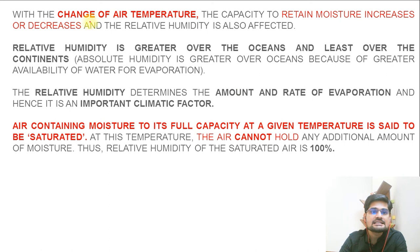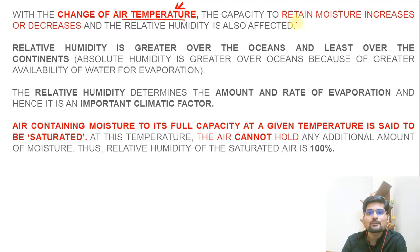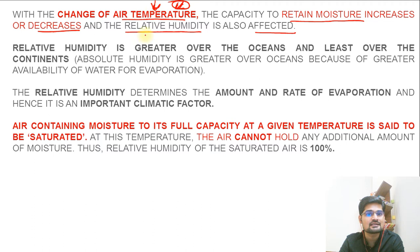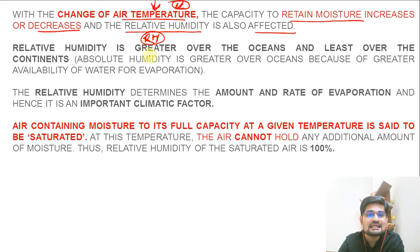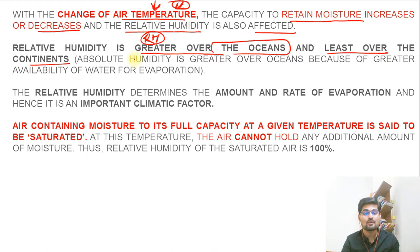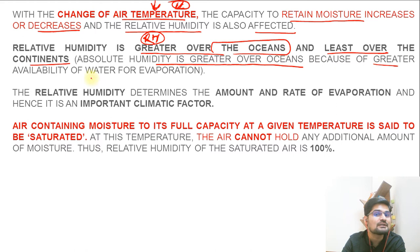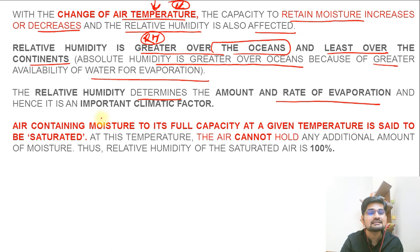The change of air temperature is a key factor. On earth there is change of temperature across latitudes and many topographical factors are also related to this. The capacity to retain moisture increases or decreases and relative humidity is also affected. Temperature changes will automatically change the capacity of the air to hold moisture. Relative humidity is greater over the oceans and least over the continents - the continentality factor means the interior of continents has lesser moisture. Absolute humidity is also greater over oceans because of greater availability of water for evaporation. Relative humidity determines the amount and rate of evaporation, making it an important climatic factor.